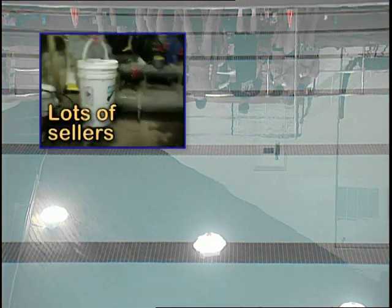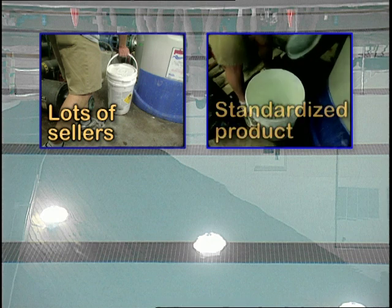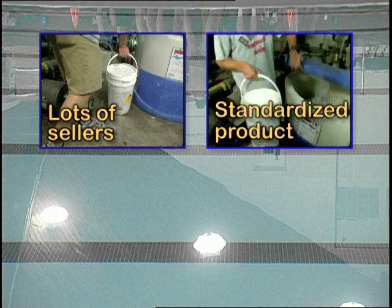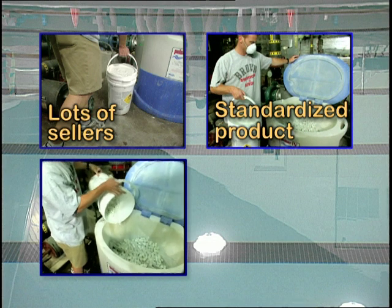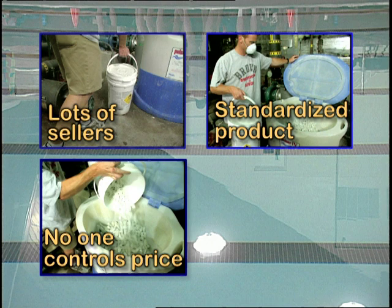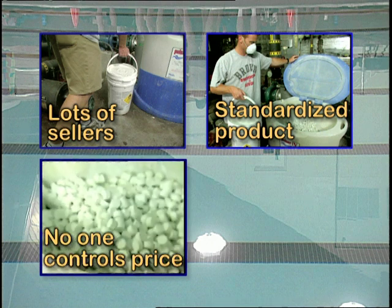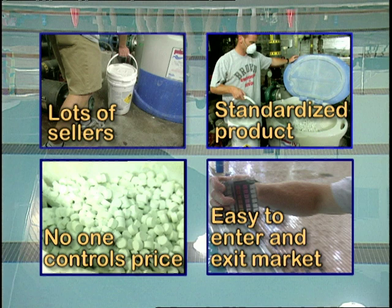There are lots of sellers — in chlorine's case, lots of chemical companies. Every supplier's chlorine is pretty much the same standardized, homogeneous product; it's a chemical element after all. No chlorine maker exerts control over price. For suppliers, price under pure competition is a take-it-or-leave-it proposition. It's not all that hard for a supplier to enter the market or exit, mainly because it doesn't take a huge investment to start producing chlorine.